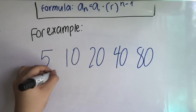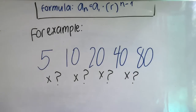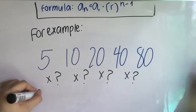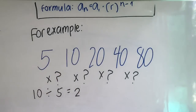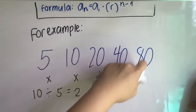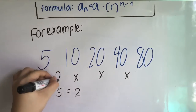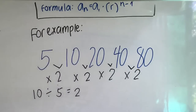But how exactly do we get the common ratio of a geometric sequence? All we simply need to do is divide the second term by the first term. In this case, 10 divided by 5 is equal to 2. Now that we know that 2 is the common ratio, we can see that 5 times 2 is 10, 10 times 2 is 20, 20 times 2 is 40, and 40 times 2 is 80. And that forms a geometric sequence.